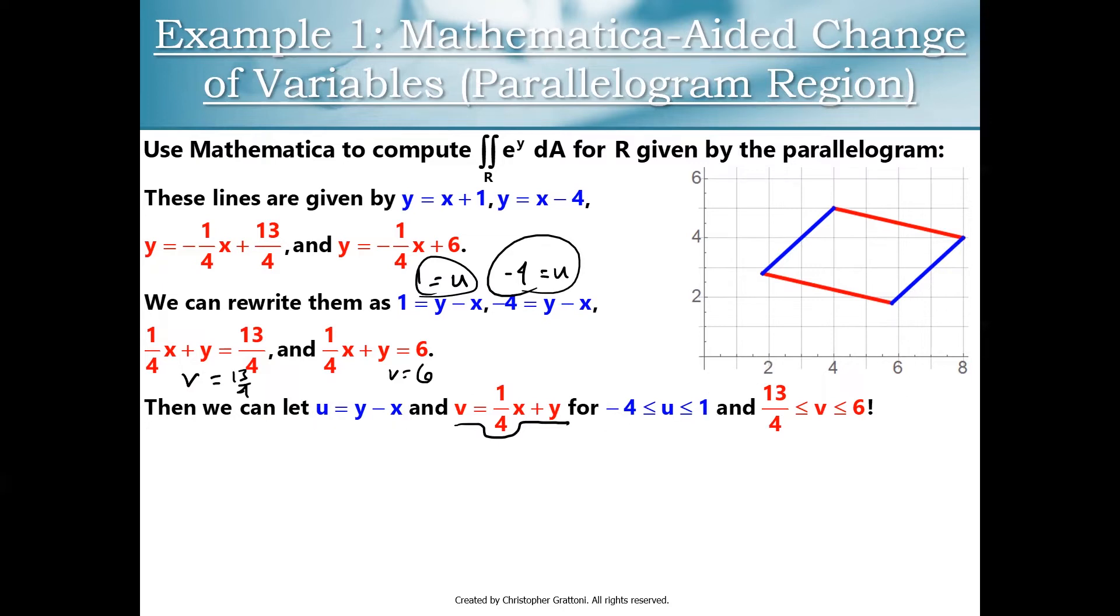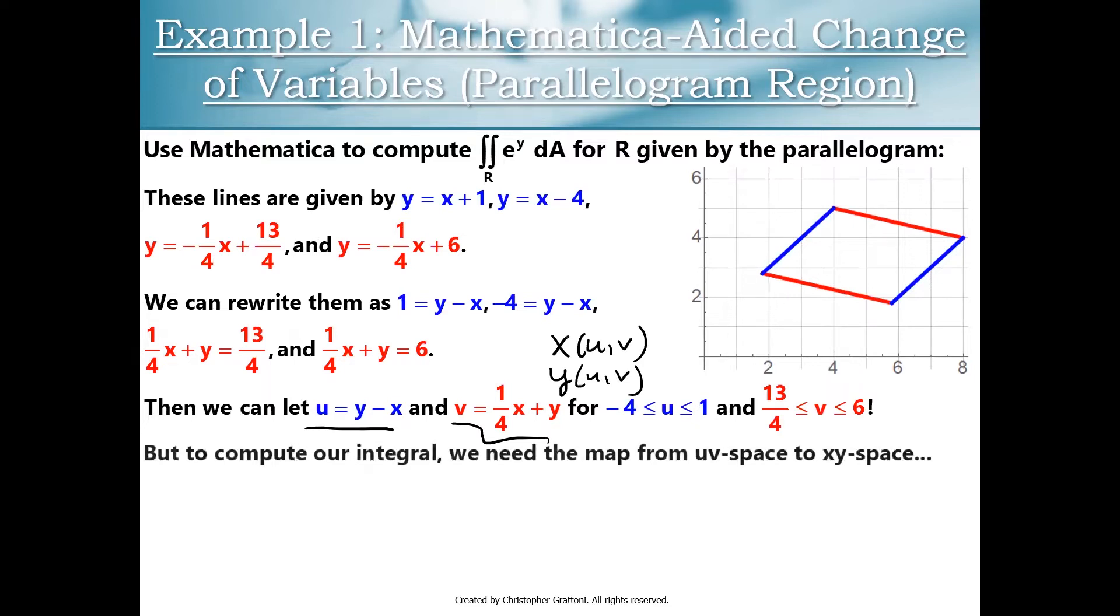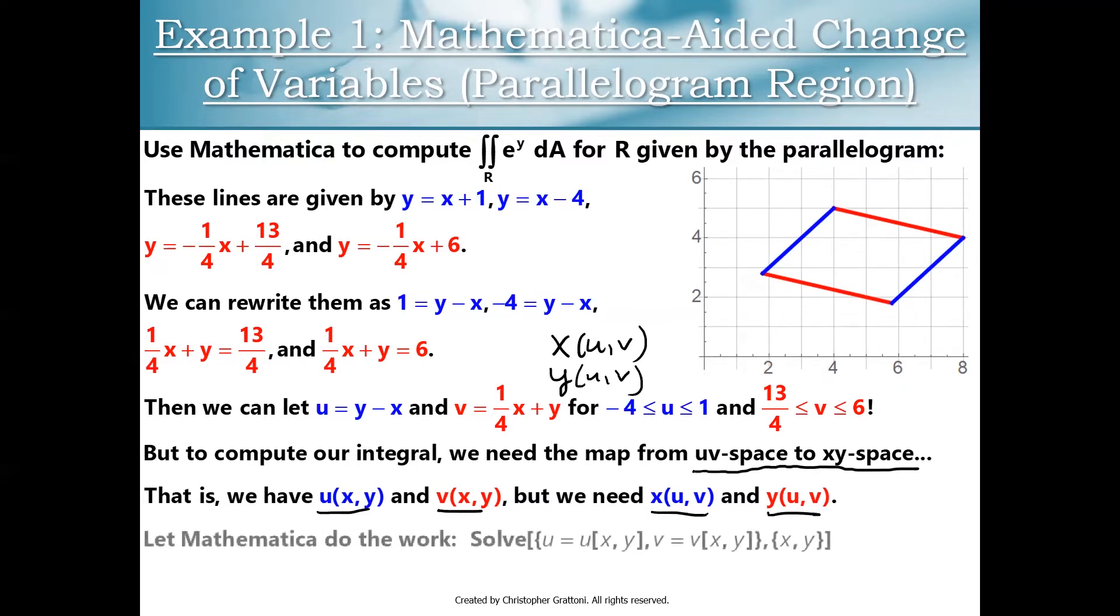Now, the only thing that went kind of strangely here is in all of our previous examples, we didn't write u as a function of x and y and v as a function of x and y. We typically had x as a function of u and v and y as a function of u and v. This is a little bit backwards from what we would have expected in a previous example. Basically, to compute our integral, we need the map to go from u v space into x y space so that we can compute our Jacobian determinant, our area conversion factor. So we have u of x y and v of x y, but we need x of u v and y of u v. And Mathematica really can come to the rescue here and make this a very quick calculation.